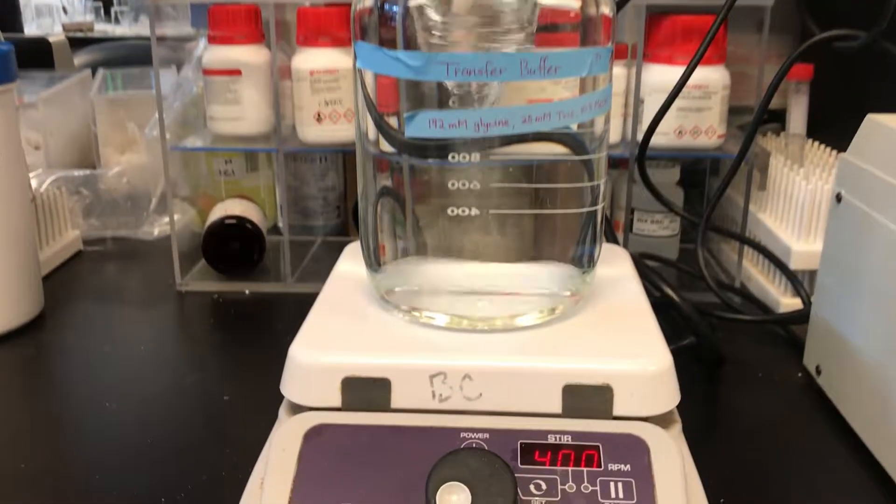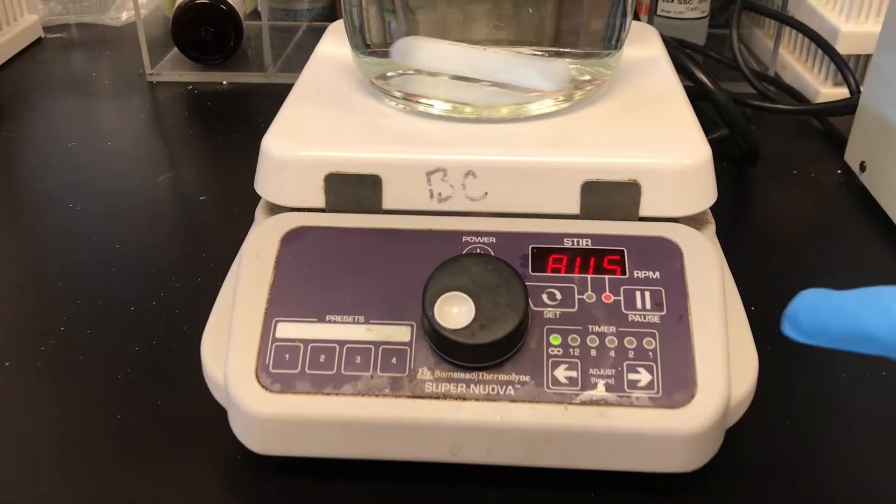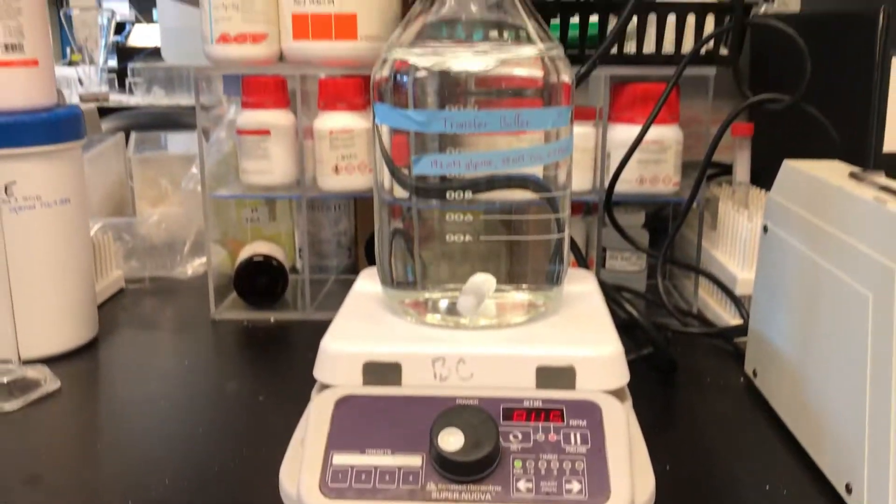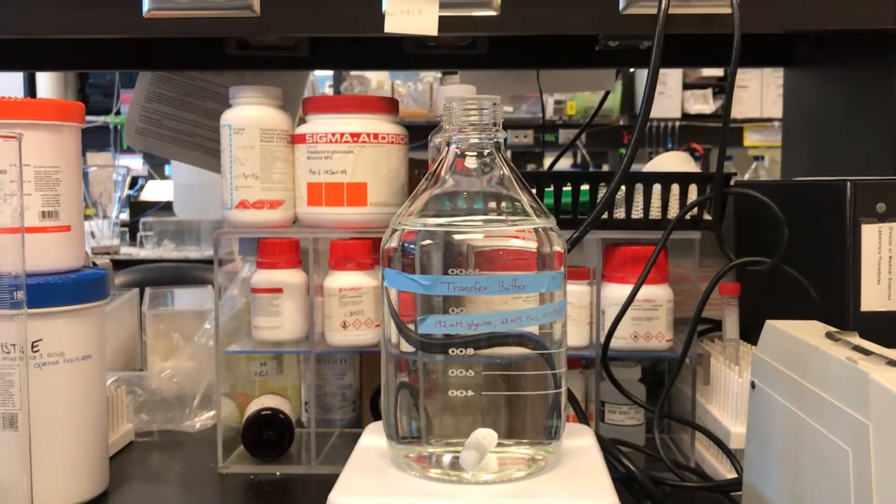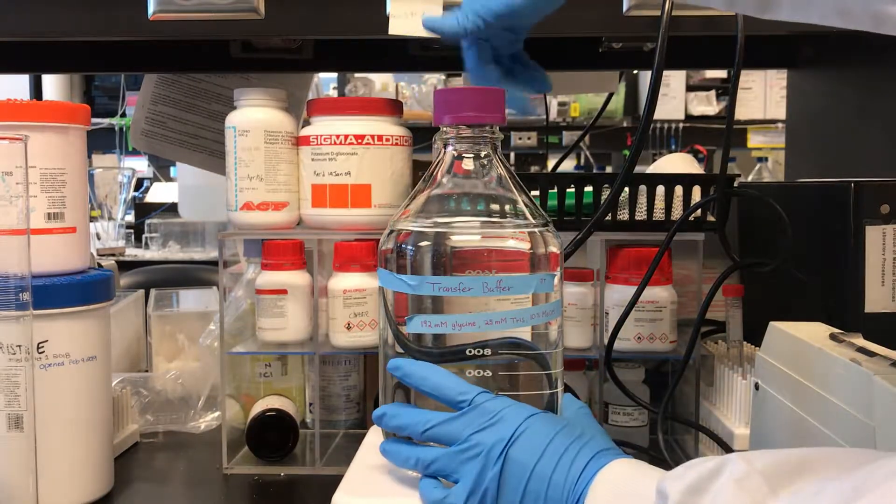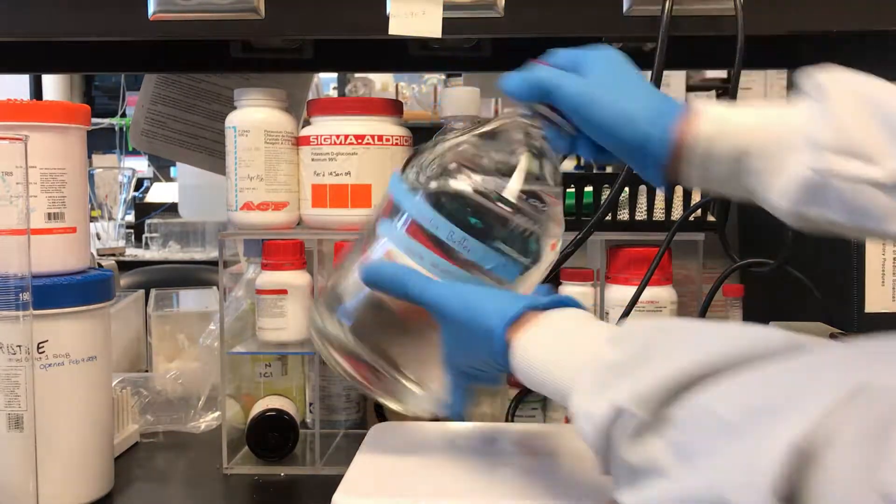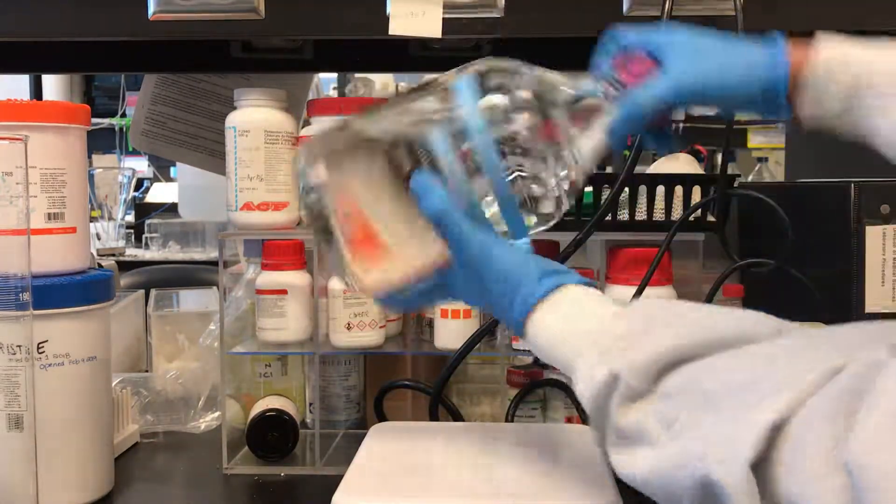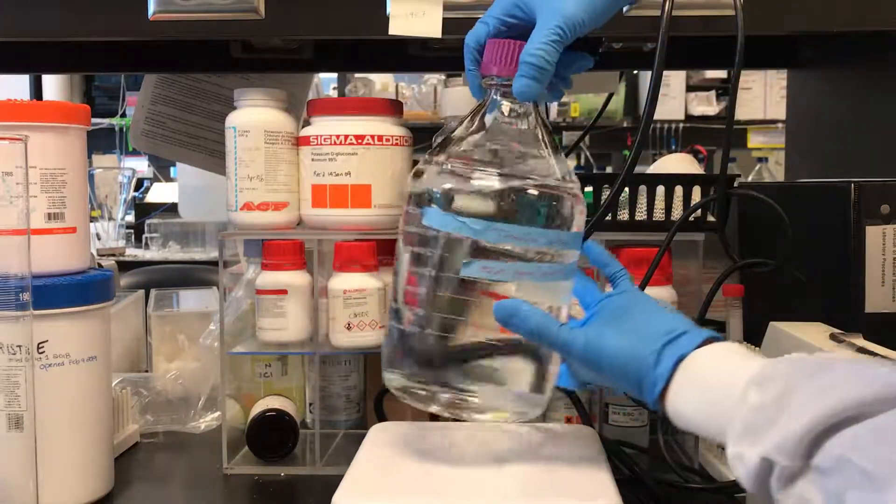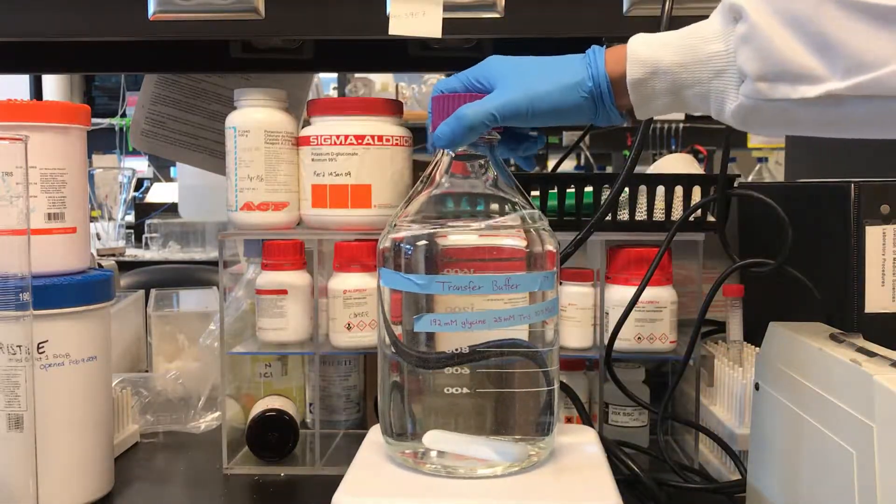Finally, stop the magnetic stirrer. Place the lid back on and tilt the bottle to flush chemicals at the neck of the bottle.